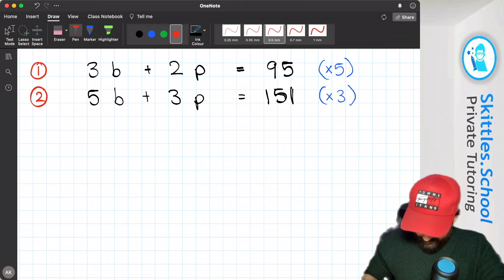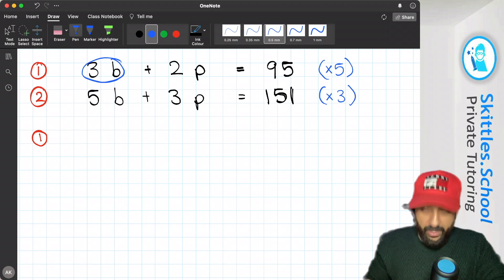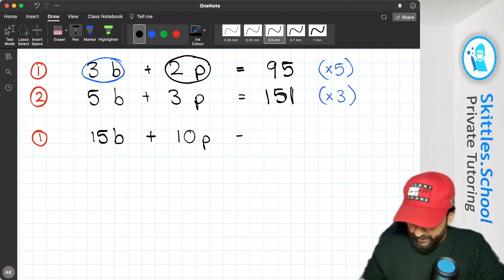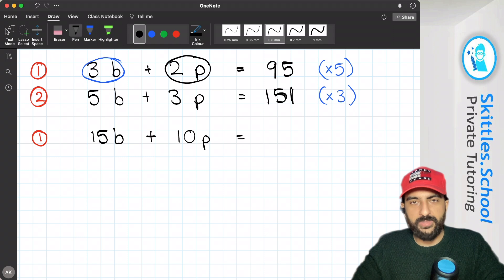So let's work that out. So equation 1, if we were to multiply all of that by 5, 3b times 5 is 15b, 2p times 5 is 10p, and 95 times 5 is 475.